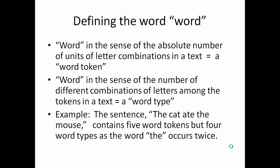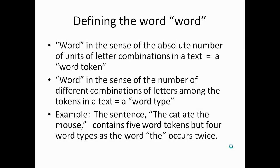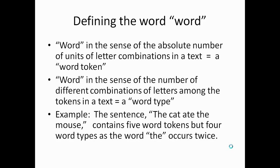We can contrast a word token with a word type. In this sense, we're using 'word' not as a simple absolute number of combinations of letters, but as different ones — how many individually different words there are. For example, the sentence 'the cat ate the mouse' has five word tokens but four word types, because the word 'the' occurs two times. That's one word type occurring twice.